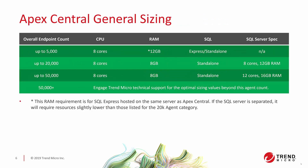Apex Central is much simpler to talk about in terms of general sizing. Up to 5,000 agents, you're looking at 8 cores and 12 GB with Express installed on the system. Moving to a standalone SQL, up to 20,000 agents the Apex Central server stays at 8 cores and 8 GB of RAM, while the SQL Server — which really takes the brunt — is at 8 cores and 12 GB. At 50,000 agents the server itself remains 8 cores and 8 GB, and the SQL Server jumps to 12 cores and 16 GB of RAM.